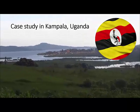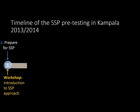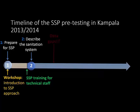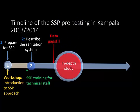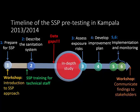The Sanitation Safety Plan comprises six distinct steps. To initiate the pre-test in Kampala, a stakeholder workshop was held to introduce the approach, and a team of experts was prepared for validating SSP steps. A specific SSP training session for technical staff was given and the sanitation system was described. Major data gaps on water and soil-related diseases and chemical pollutants were identified, and an in-depth study with health experts was conducted. This helped the SSP team conduct the health risk assessment, set priorities, develop an incremental improvement plan, and implement an operational and verification monitoring framework.